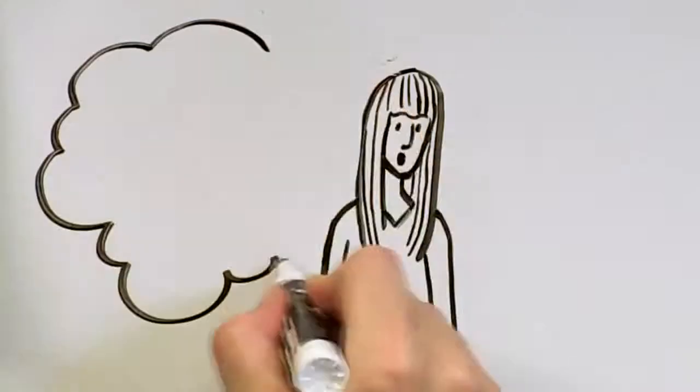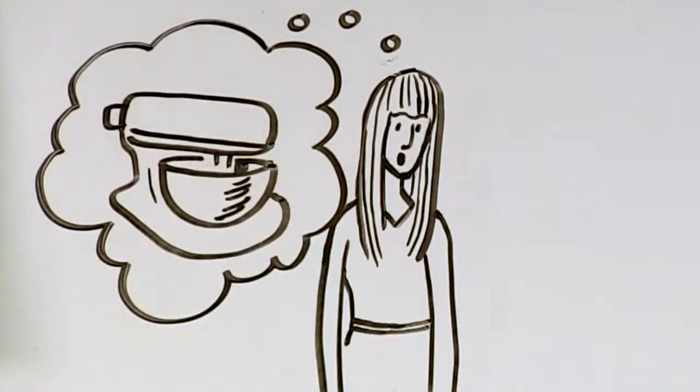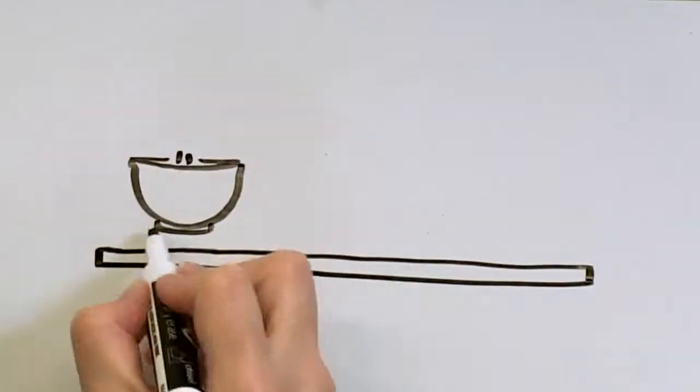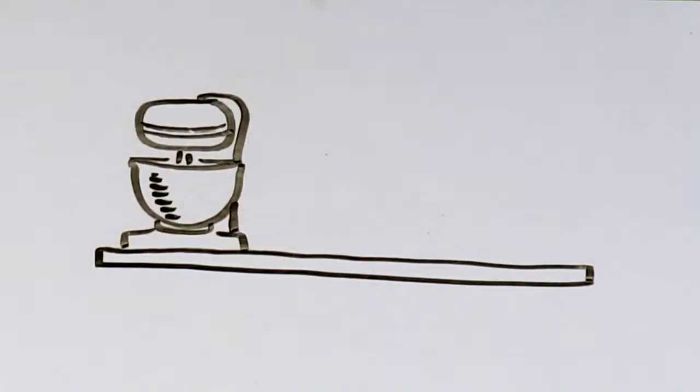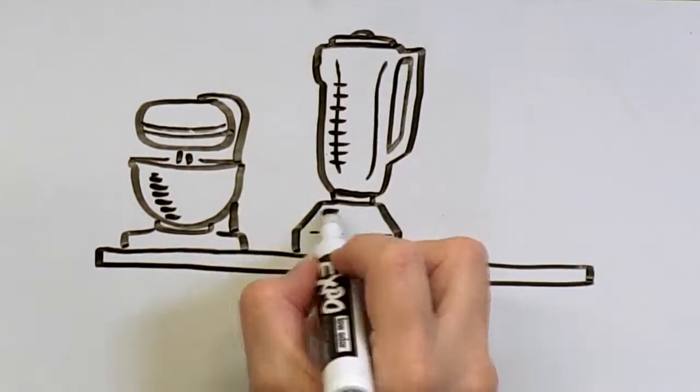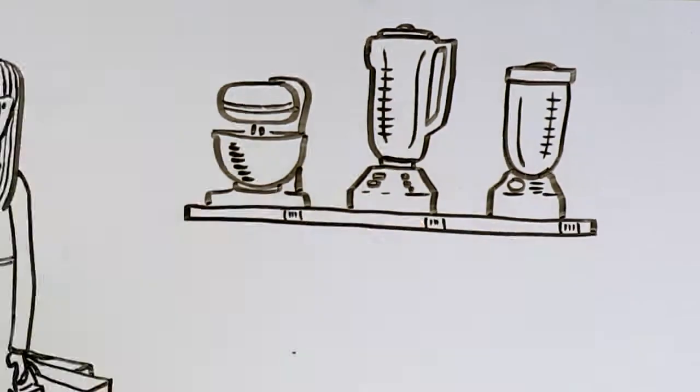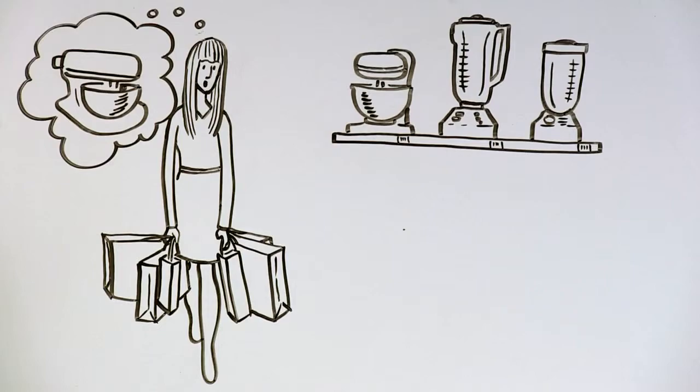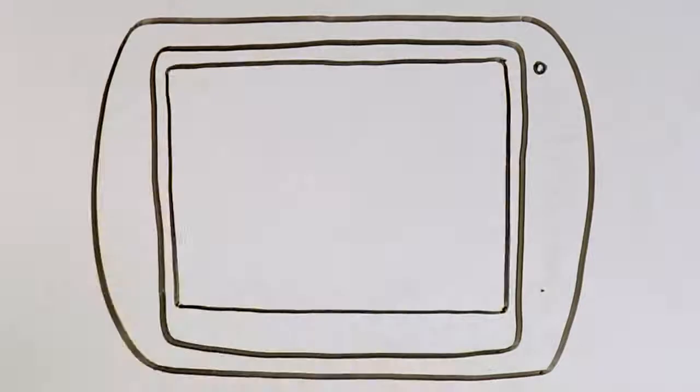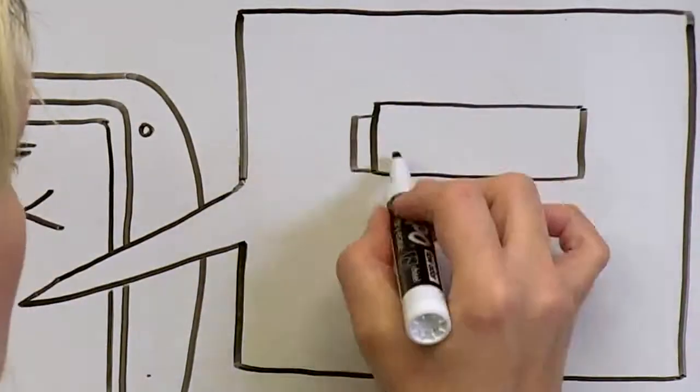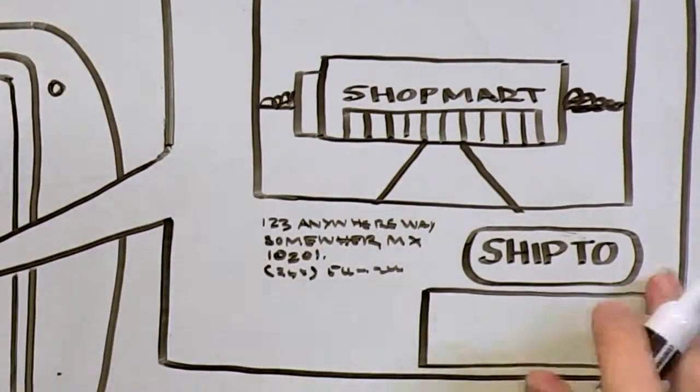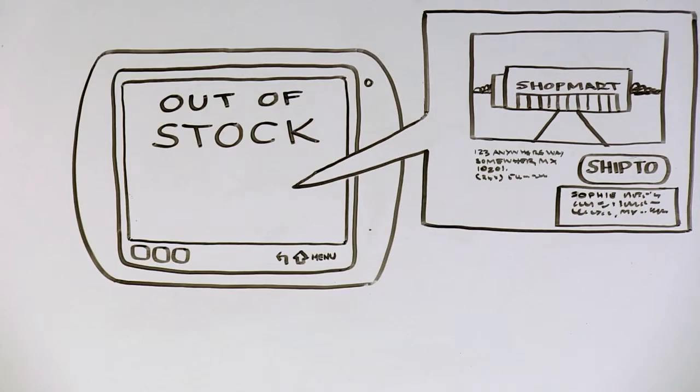Heading home, Sophie remembers that her mixer has conked out. She can't make her homemade salsa without one and she can't have a party without chips and salsa. She pops into the kitchen store and sees the exact model she needs. But wouldn't you know it's out of stock? No need to panic. It'll ship from another store directly to Sophie's apartment the following morning.